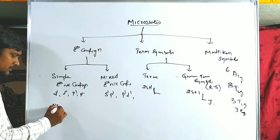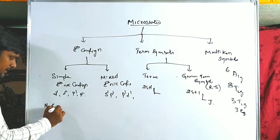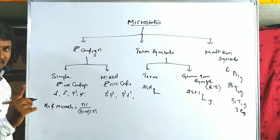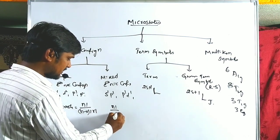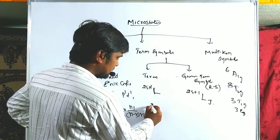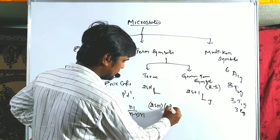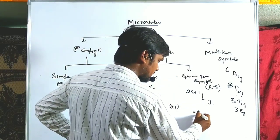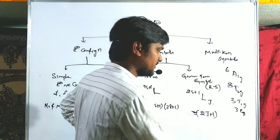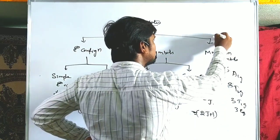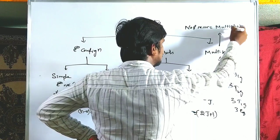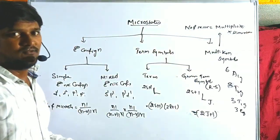The formulas are: for simple electronic configuration, microstates = n! / [(n−r)! × r!]; for mixed configuration, multiply the individual nCr values together. For a term symbol (without J): microstates = (2S+1)(2L+1). For ground term symbol (with J): microstates = 2J+1. For Mulliken symbols: microstates = multiplicity × dimensionality.